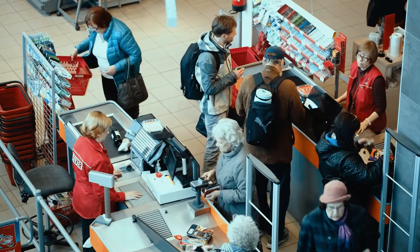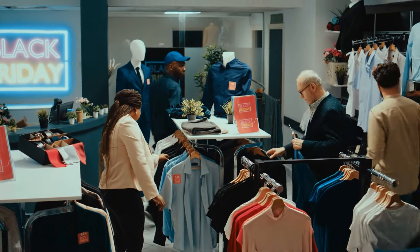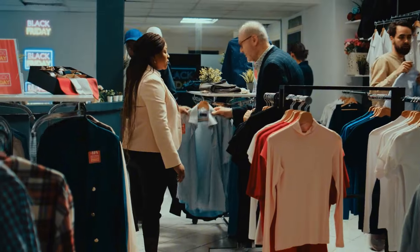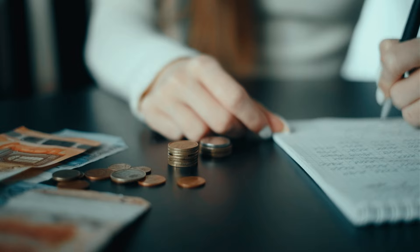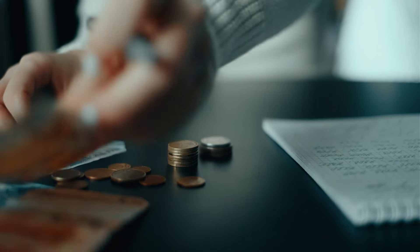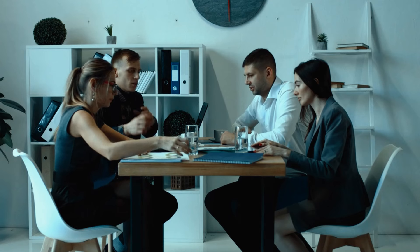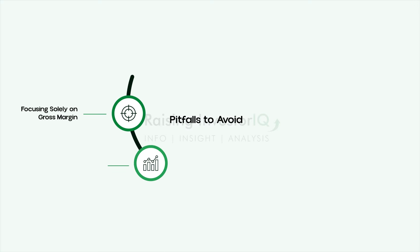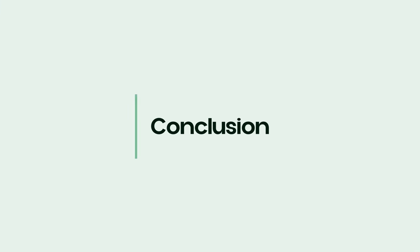Be mindful of seasonal fluctuations or one-time events that might temporarily skew gross margin figures. A surge in sales during a holiday season might inflate margins, while unexpected supply chain disruptions could temporarily depress them — look for consistent patterns rather than reacting to anomalies. Finally, be aware that different companies may use varying accounting methods for inventory and cost of goods sold, which can affect gross margin calculations, so adjust your analysis accordingly.